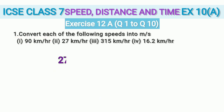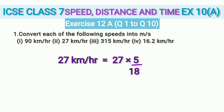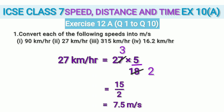In the second sub-question, let us convert 27 km/h to m/s by multiplying 27 by 5/18. We can cancel 27 and 18 using the 9 times table — 9 twos are 18 and 9 threes are 27. So we are left with 3 fives are 15 by 2. Dividing 15 by 2 gives 7.5. So 27 km/h equals 7.5 m/s.